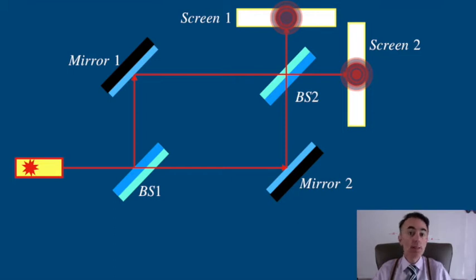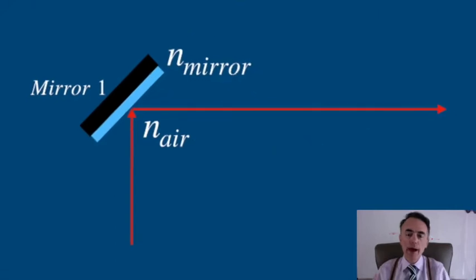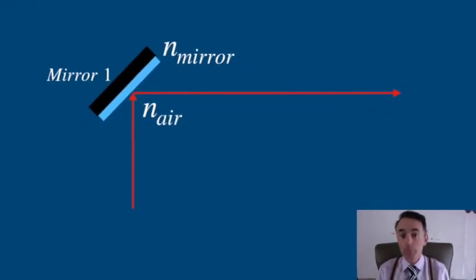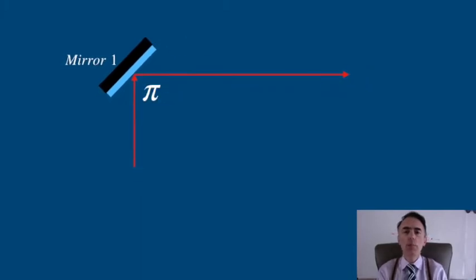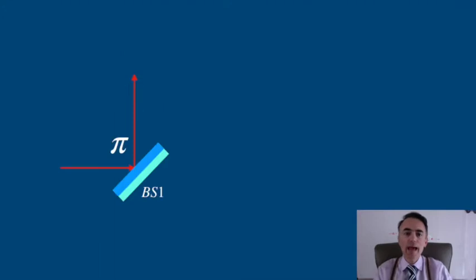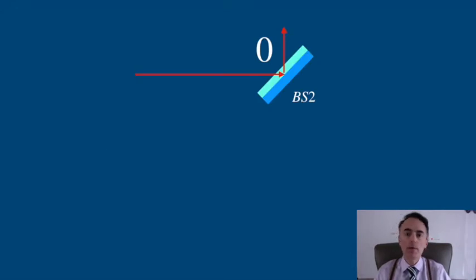As we will see later in this course, when light is reflected by a mirror of higher index of refraction than the medium that light is traveling from, there is going to be a pi phase shift. In a beam splitter we can have a dielectric coating. When light is reflected off from one side, there will be a pi phase shift. When it is reflected off at the other side, there will be no phase shift.